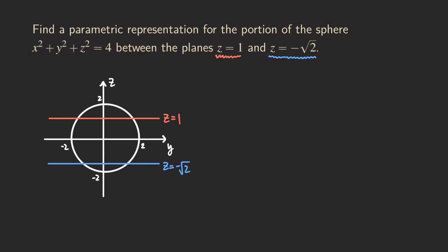We want the portion of the sphere that is between those two planes. The question is how do we parametrize it? We are still going to use spherical coordinates because the surface we're parametrizing is still part of a sphere. The question is how do we identify the angle phi, since we only want the portion between those two planes. We can graph two dashed lines to give us the lower bound and upper bound for phi — we don't know what those are yet.